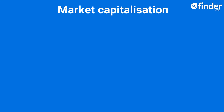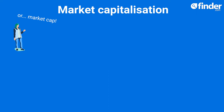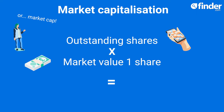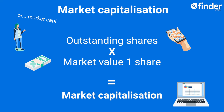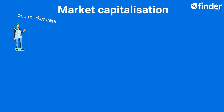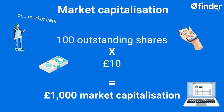Market capitalization, or market cap, is a company's value as determined by the stock market. It's calculated by multiplying the number of shares currently held by stakeholders, known as outstanding shares, by the current market value of one share. So if a company has 100 outstanding shares selling for £10 each, its market cap would be £1,000.